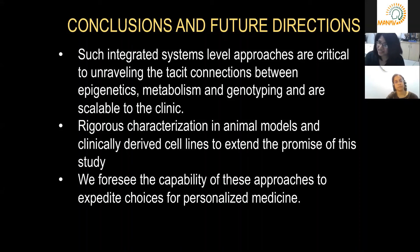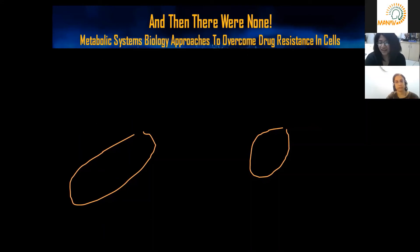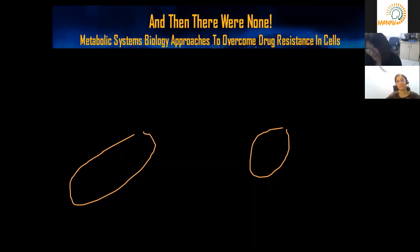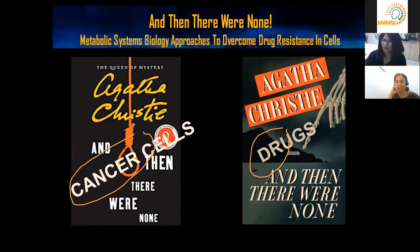Rigorous characterization is essential — this was done in a model system, so rigorous characterization in animal models and clinically derived cell lines is necessary to extend the promise of this study. These approaches can expedite choices for personalized medicine. Now, why did I call the first part of my title 'And Then There Were None'? Agatha Christie was one of the novels I grew up on, and it resonates with cancer because it is our own body and our own cells that orchestrate the evolution of tumor suppressors and the origin of tumor-causing factors.